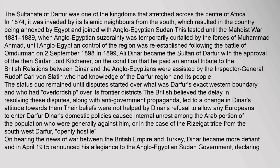Relations between Dinar and the Anglo-Egyptians were assisted by Inspector General Rudolph Carl von Slatin, who had knowledge of the Darfur region and its people. The status quo remained until disputes started over Darfur's exact western boundary and who had overlordship over its frontier districts. The British believed the delay in resolving these disputes, along with anti-government propaganda, led to a change in Dinar's attitude towards them. Their beliefs were not helped by Dinar's refusal to allow any Europeans to enter Darfur. Dinar's domestic policies caused internal unrest among the Arab portion of the population, who were generally against him, or in the case of the Rizagat tribe from southwest Darfur, openly hostile.